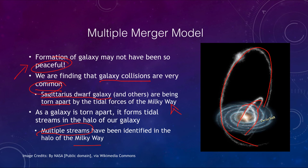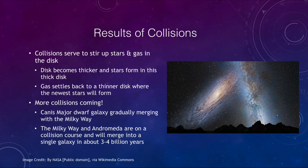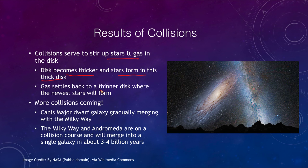What are the results of some of these collisions? The collisions serve to stir up the stars and gas in the disk, the disk becomes thicker, and stars form in this thick disk, whereas the gas will settle back down to a thinner disk where the newest stars form. So we get various layers ranging from the halo with the oldest stars, to the thick disk, down to the thin disk where the newest stars are forming.